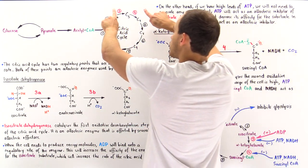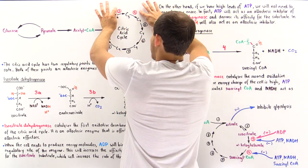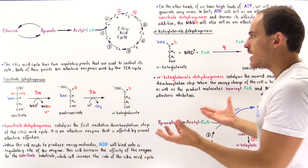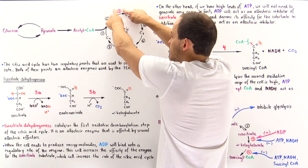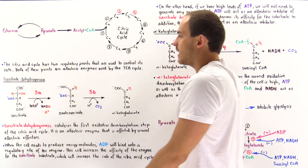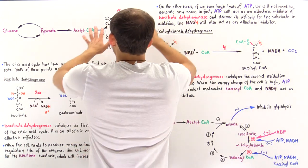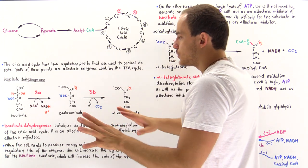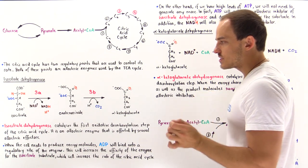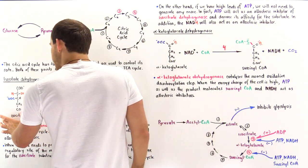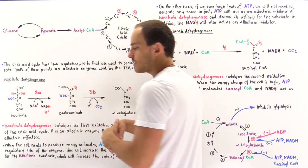These are the two important allosteric enzyme points that our cells use to regulate the rate at which the citric acid cycle takes place. Let's focus on step three, catalyzed by isocitrate dehydrogenase. We can break down step three into two sub-steps, 3A and 3B. In 3A, we have the oxidation-reduction step where isocitrate is oxidized into an intermediate oxalosuccinate.